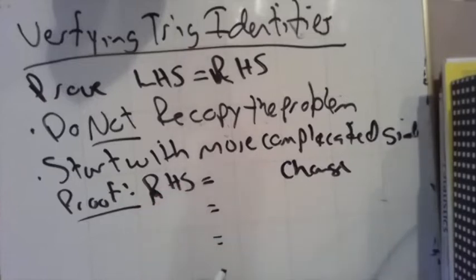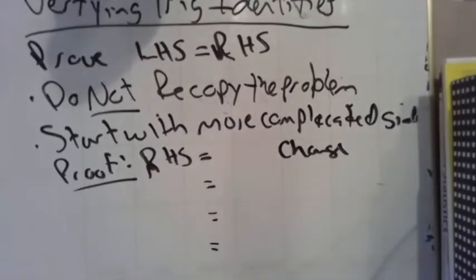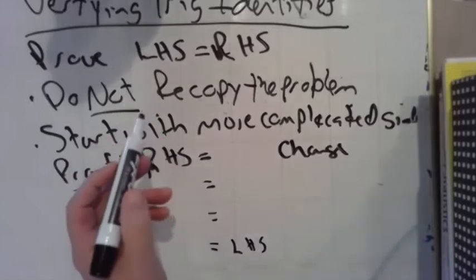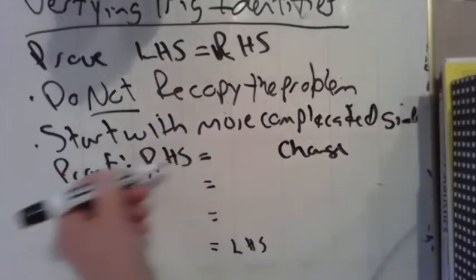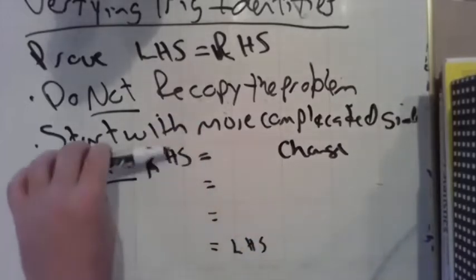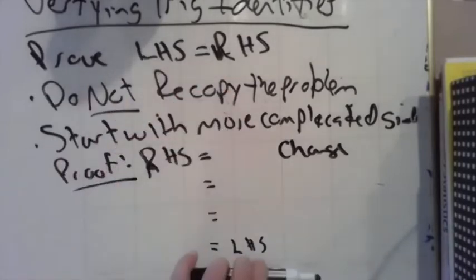Notice my equal signs are lined up, until magically in front of you appears the other side of the equation. In this case, the left-hand side. Then everything that's written here is your proof. Your proof will look like a waterfall. It will be over, go straight down, and then the other side here.